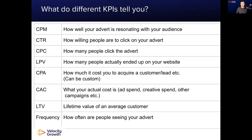CPC is how many people click on the advert and what's the cost. LPV is how many people actually ended up on your website — hugely important and often overlooked when you're looking at link clicks too closely. CPA is how much it's costing you to acquire that customer or lead. CAC is your actual cost — your ad spend, creative spend, and overhead. And frequency is about how often people are seeing your advert.